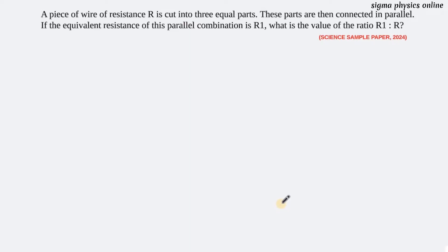Hello students, welcome back. Let's go and have a look at the next question. It's a question from this year's sample paper, and it reads: a piece of wire of resistance R is cut into three equal parts. These parts are then connected in parallel. If the equivalent resistance of this parallel combination is R1, what is the value of the ratio R1 to R?